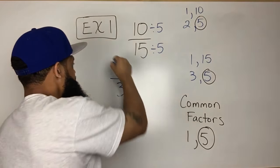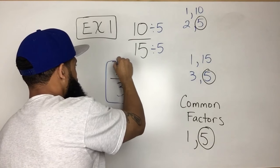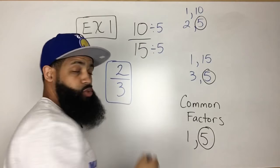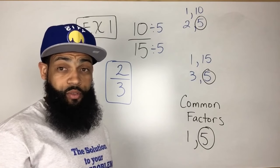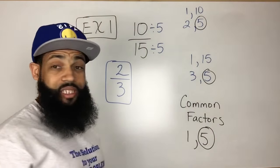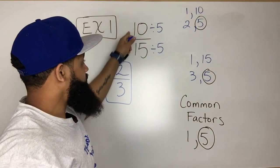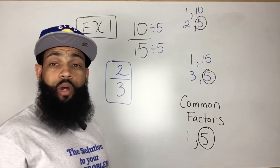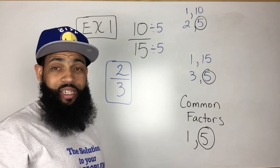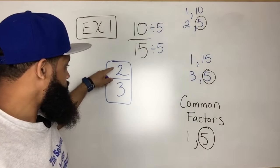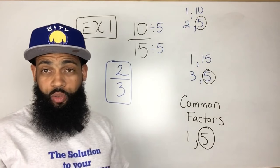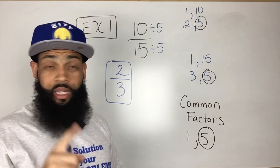Now, this is the same value as 10 over 15, 2 thirds. That's the simplified fraction of 10 over 15. And the way that we know that it is simplified is the largest number or the largest factor that 2 and 3 have in common is 1 now.